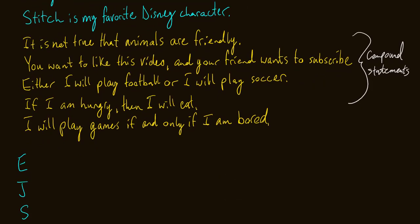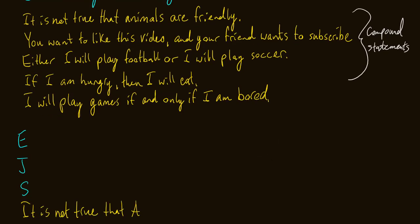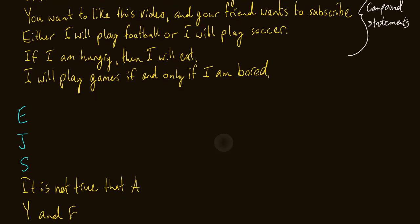Now what about for the compound statements? There's a difference between simple and compound statements, so it must be the case that compound statements are a little bit more complex. Well, if we look at our simple statements that are hidden within our compound statements, it is not true that animals are friendly. Animals are friendly is the simple part, so we would just probably say A for that. So I'll just write out, it is not true that A. You want to like this video and your friend wants to subscribe. Now for this one, I think you want to like this video can be a capital Y. And that's important to note also, when we have a symbolic representation of a statement, we're going to always use capital letters. So I might say capital Y for that. And your friend wants to subscribe, a friend, so I might say capital F. So that entire statement I would translate to capital Y and capital F.